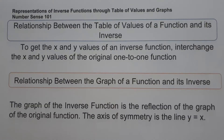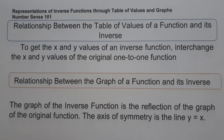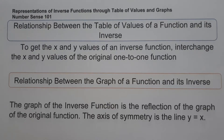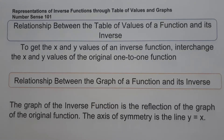The relationship between the table of values of a function and its inverse: to get the x and y values of an inverse function, interchange the x and y values of the original one-to-one function. That means the x value of the original function becomes the y value of its inverse function, and the y value of the original function becomes the x value of its inverse function.